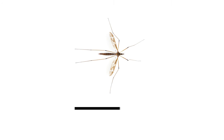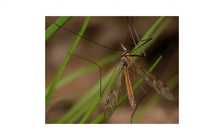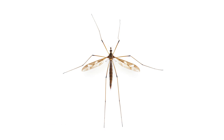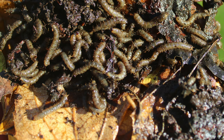Crane flies grow up to two inches in length. Both male and female crane flies lack piercing mouthparts, and many species cannot even eat after reaching maturity. They have large wings that are often longer than the abdomen, and when at rest, the wings lay at an outward angle.